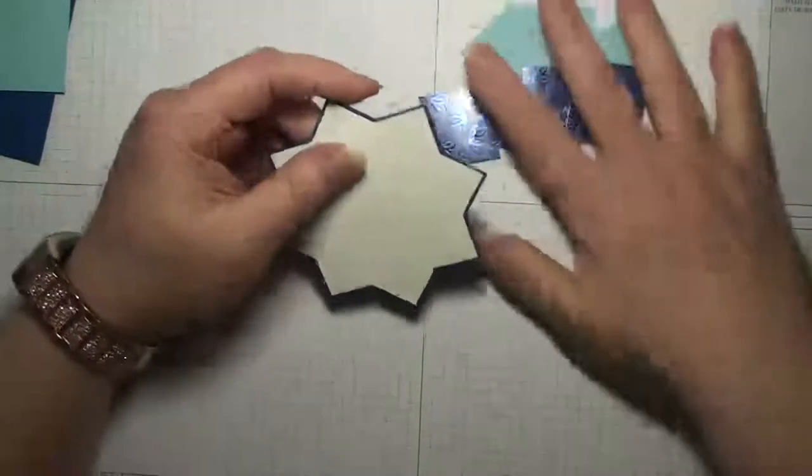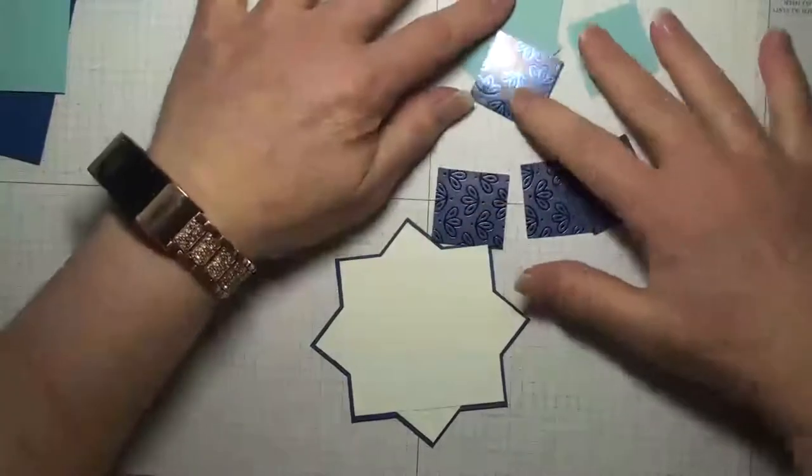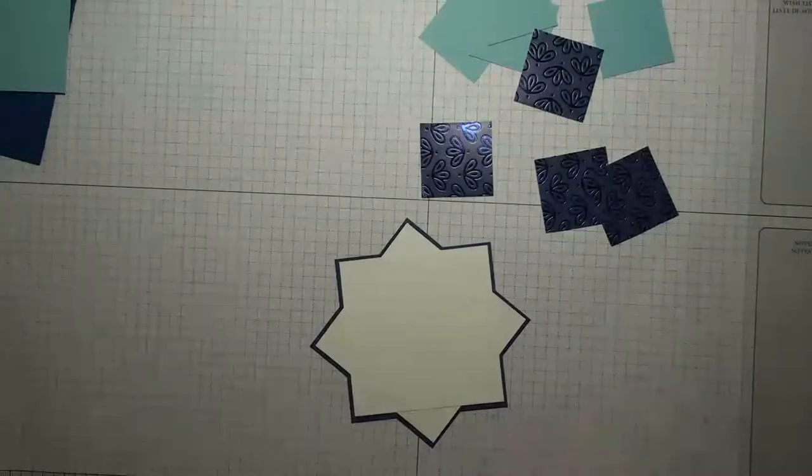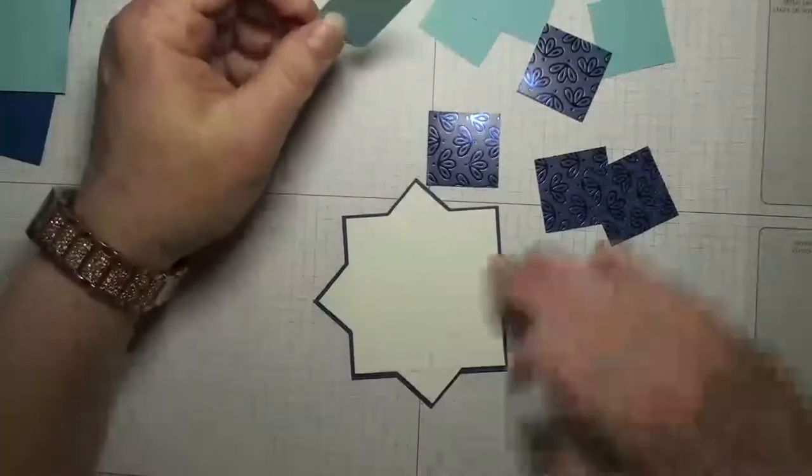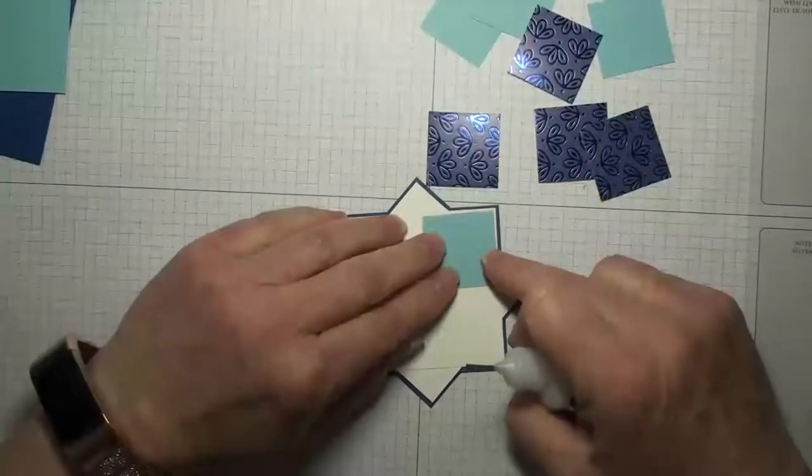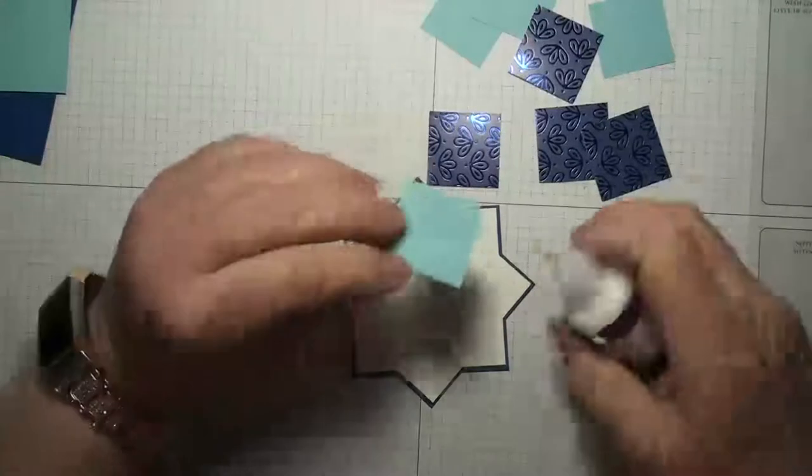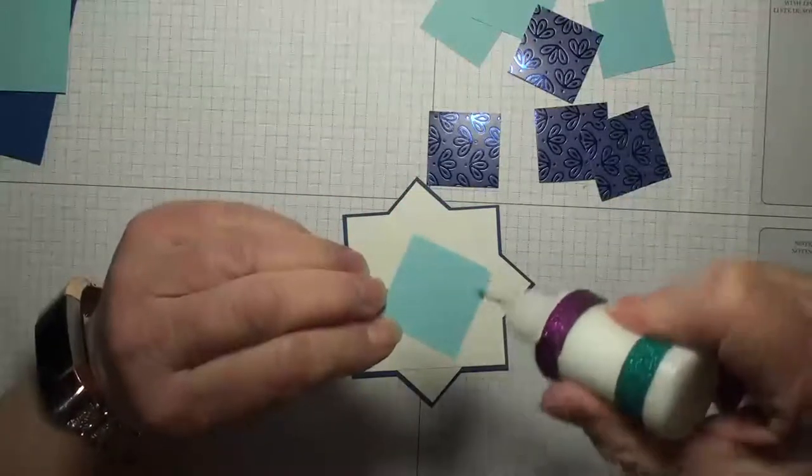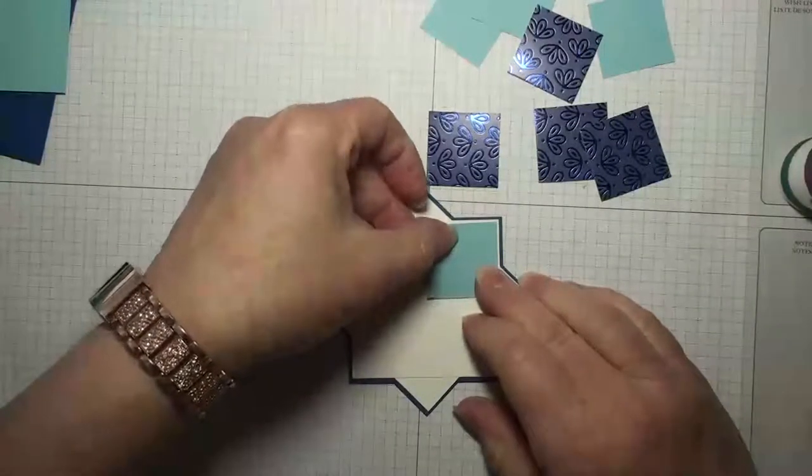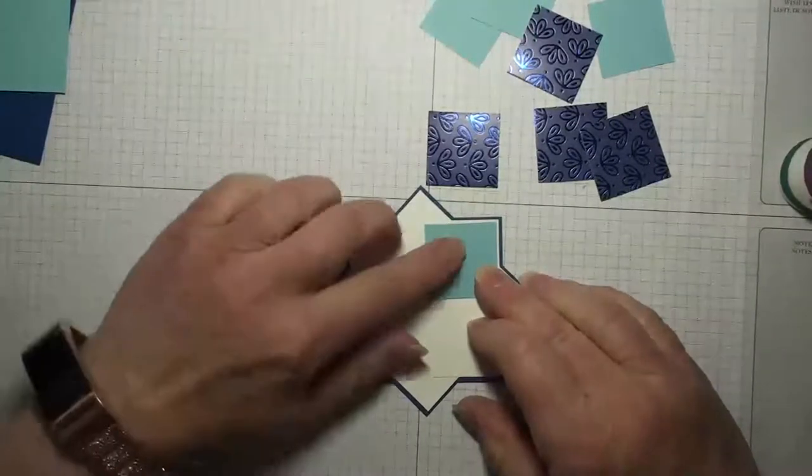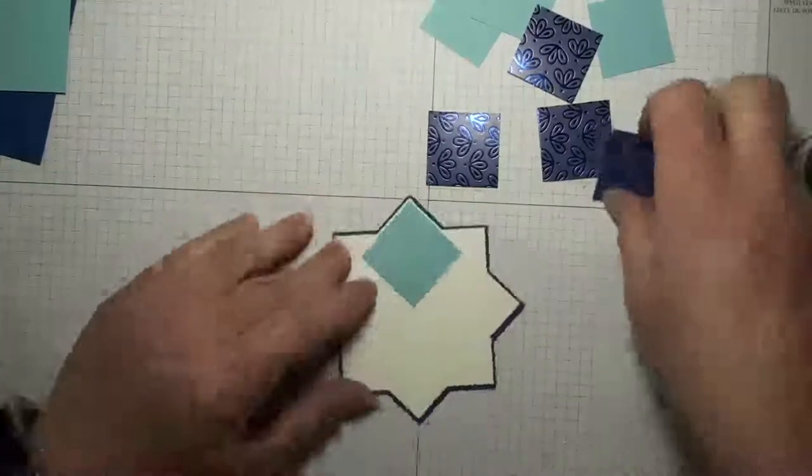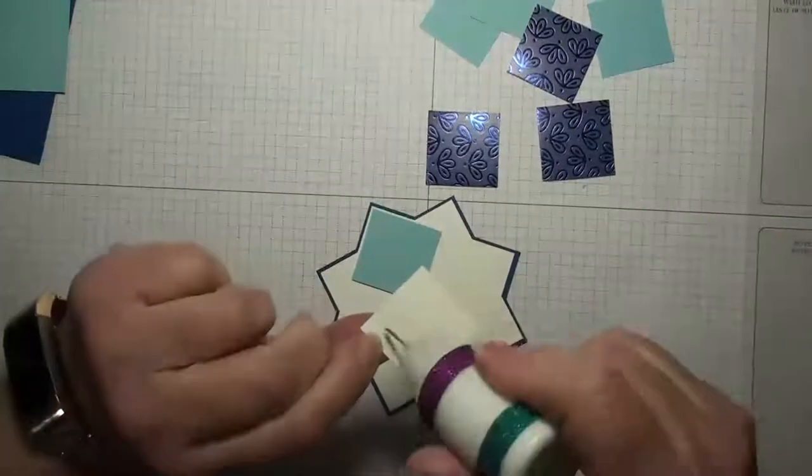Now the next step is to put our pinwheel together. So what we're gonna do and I'm gonna use a liquid adhesive just because that's one of my favorite adhesives. So the first square you're gonna put down in a corner but when you put it down you're only gonna put adhesive on one edge like that because we're gonna have to access this under part here once we get all our squares down.